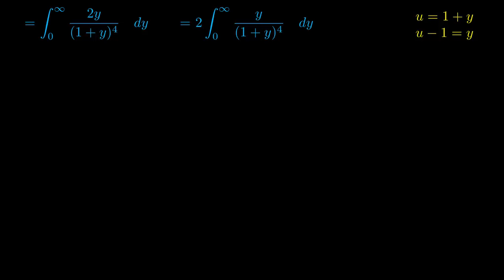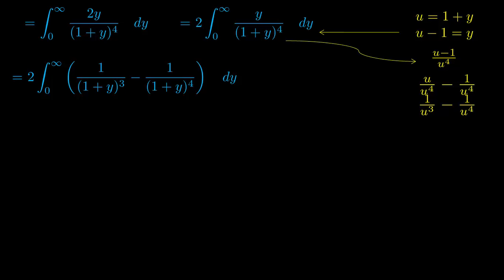To evaluate this integral, pull the 2 out first and use a u substitution. Your u equals 1 plus y and u minus 1 equals y. Plug that value back into the equation and you'll end up with (u minus 1) over u to the fourth. Now split the fractions and you'll end up with 1 over u cubed minus 1 over u to the fourth. Put the value 1 plus y back into u and this will be your new equation.